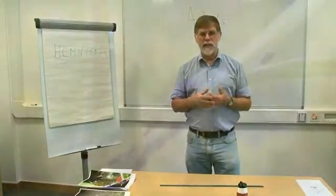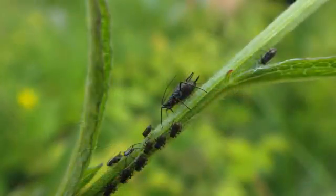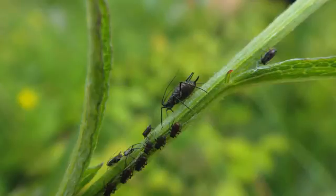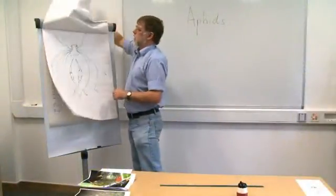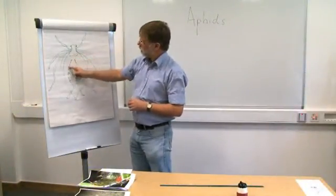And the other fascinating thing about aphid reproduction is that they bear live young. So most insects lay eggs, aphids bear live young. And these are known as nymphs. So when you're looking at an aphid, what you're actually seeing is a mother aphid. And inside that mother aphid, you have a whole line of embryos.